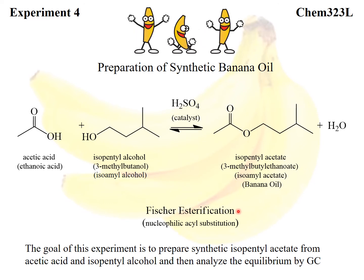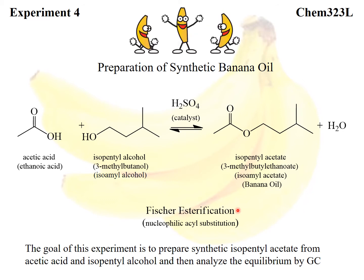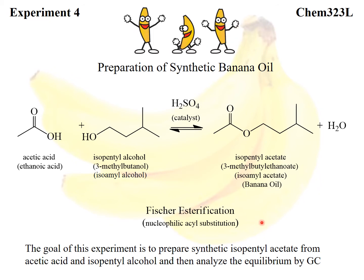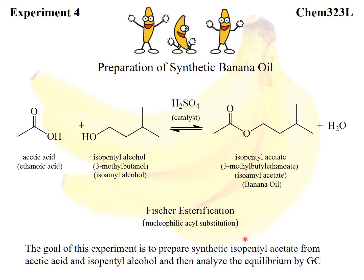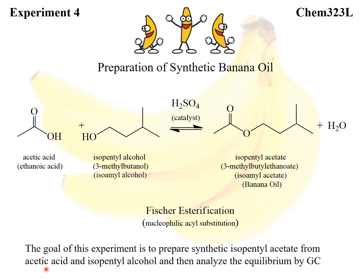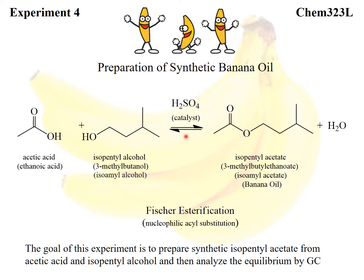Overall, this reaction is known as a Fischer esterification, which we're going to learn about later in the semester and again next semester when you take OChem 2. The goal of this experiment is to prepare synthetic isopentyl acetate from acetic acid and isopentyl alcohol and then analyze the equilibrium, because this reaction is in equilibrium.